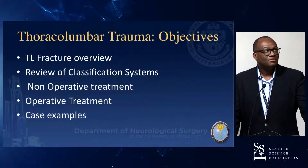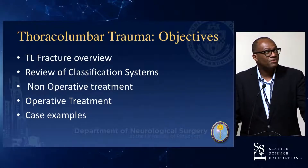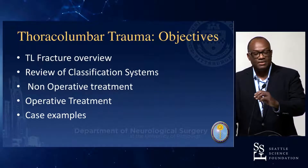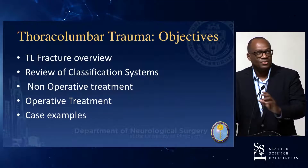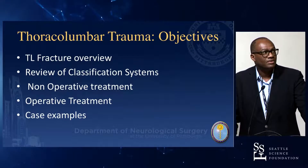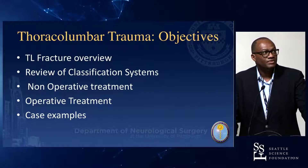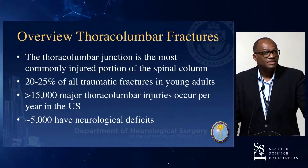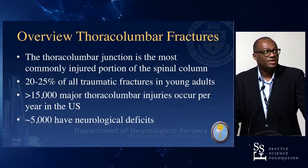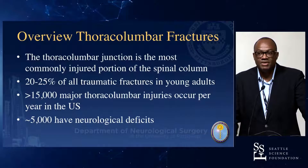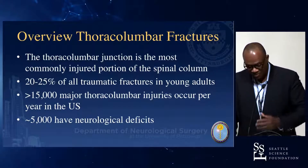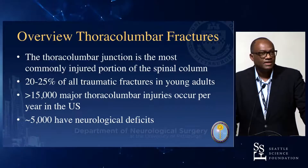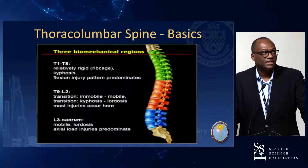So objectives would be fracture overview, the classification system overview — this more of a historical overview — and then also non-operative treatment versus operative treatment, and a few case examples. This is still 15,000 major thoracolumbar injuries occurring per year in the U.S., and about 5,000 of them have neurological deficits. The number seems to be rising, but it's more better capture than the incidence by itself.